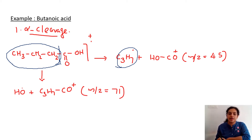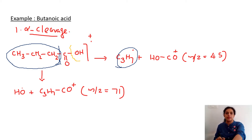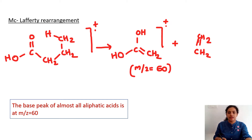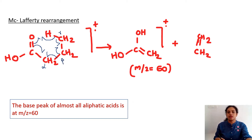The next fragmentation gives OH dot, where the bond breaks to give OH dot and the remaining C3H7CO+ at m/z = 71. When it comes to McLafferty rearrangement — alpha, beta, gamma positions are involved — a peak at m/z = 60 is obtained, and it is the base peak of almost all aliphatic acids.